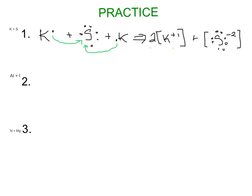Our next example is aluminum and iodine. Aluminum has three valence electrons — first two go together, the last one by itself. Iodine is a halogen with seven valence electrons. Iodine is looking to gain one, so we take one of aluminum's valence electrons and draw it over to iodine. Iodine is now stable with eight valence electrons, but aluminum still has two remaining.